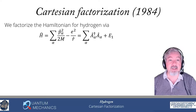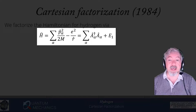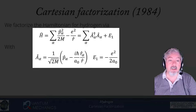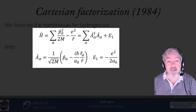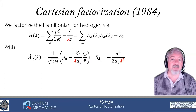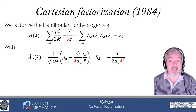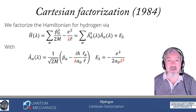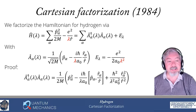This Cartesian factorization originated in 1984. We factorize the Hamiltonian, written in Cartesian form as the sum over alpha of p_alpha²/2m minus e²/r, as the sum over alpha of a†_alpha a_alpha plus an energy E_1. The ladder operator is 1/√(2m) times (p_alpha − iℏ/(a_0) · r_alpha/r), and the energy is −e²/(2a_0), which is the ground state energy. We generalize this to H(λ), multiplying the potential by 1/λ, modifying the ladder operators accordingly, so the energy becomes −e²/(2a_0 λ²). Lambda equals 1 corresponds to the ground state of hydrogen.